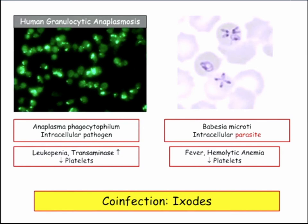These people come in sick as stink: glucopenia, transaminitis, low platelets. You're not going to have to diagnose it on the boards. It's really going to be in the context of co-infection with a patient with Lyme, who they're going to tell you has a Bell's palsy.